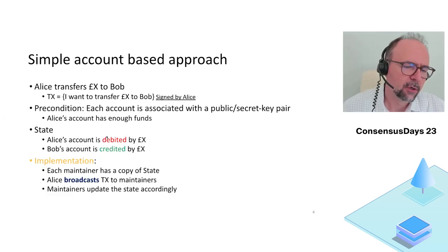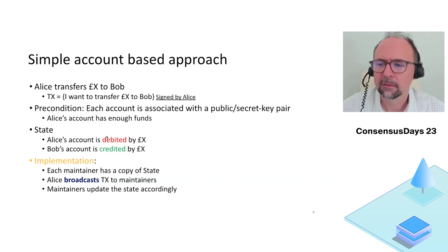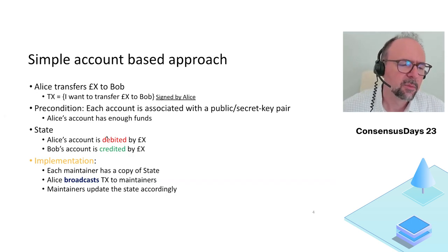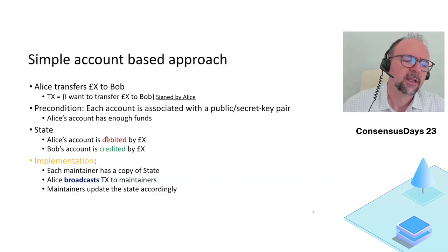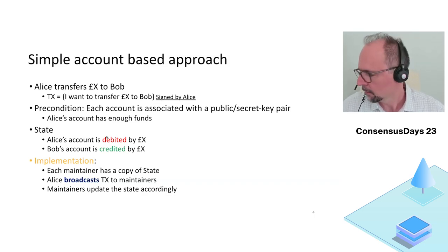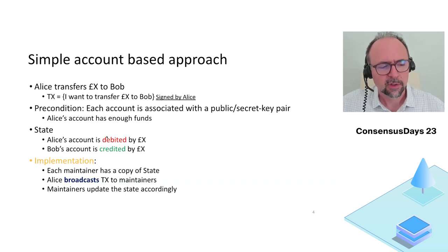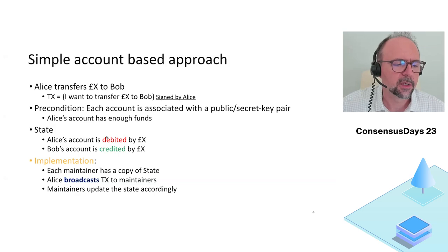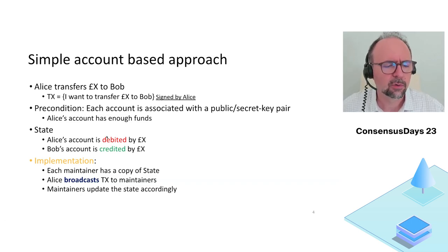Let's take a simple account-based approach and study it, as it will be quite fitting especially in the context of regulatory compliance. We have Alice and Bob who want to transfer some funds. The precondition is that every account has a public and a secret key pair — there is a way to authenticate to the system based on a public-key setting. What we want to achieve by the payment is to debit Alice's account and credit Bob's account. A simple implementation is that every maintainer has a copy of the state, Alice broadcasts the transaction to the maintainers, and they update the state accordingly.